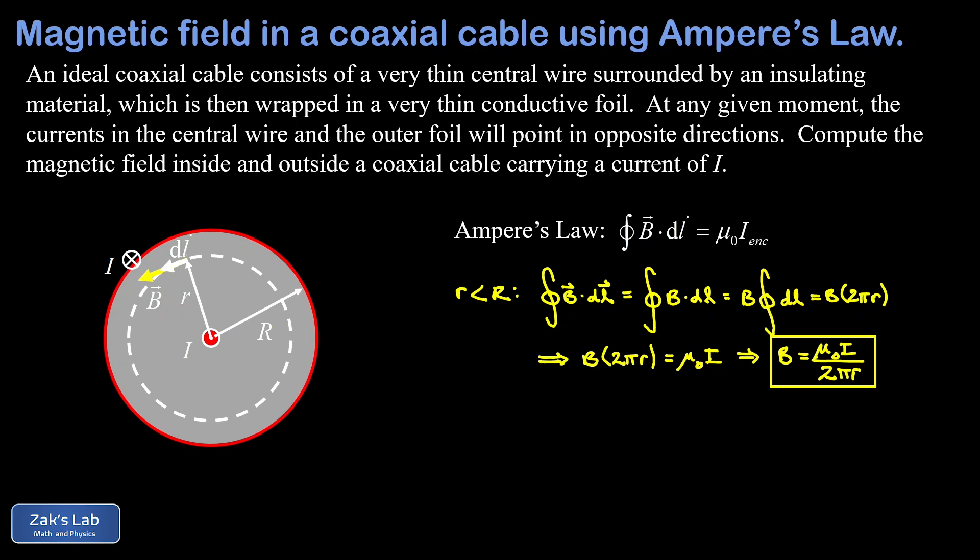Next we're going to consider the case where little r is bigger than big R. We've already drawn an Amperian loop where the radius is larger than the radius of the coaxial cable. We have all the same symmetry issues going on. If there is any magnetic field out there, then it should be pointing in the circumferential direction, which means a circular Ampere loop makes sense.